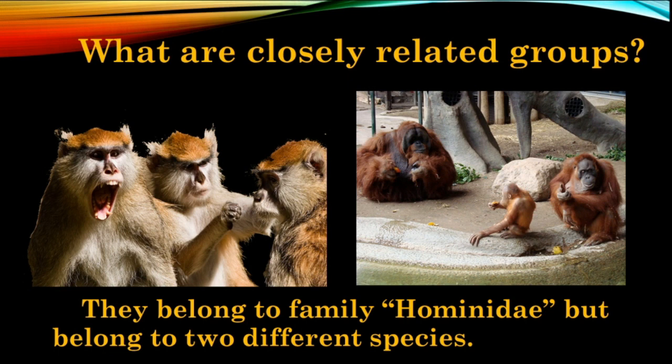So here we are observing the character of hair color. Within that character there are two variations: in monkeys the hair color is yellowish, and in orangutans it is somewhat brown. That is the first variation observed. Upon careful observation you can also find that orangutans are bigger in size compared to monkeys — that is one more variation. In terms of behavior also, you can find a set of variations between these two groups.